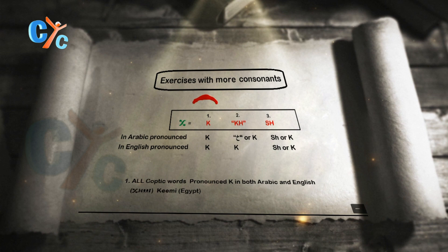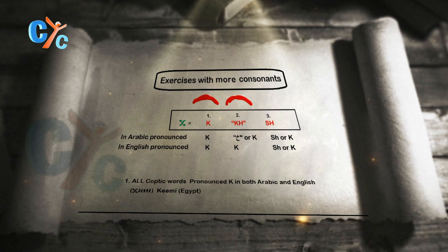It's K. So in all words that are Egyptian in origin and not borrowed from a foreign language — whether Greek, Hebrew, or other languages — this letter is always pronounced K. The next way of pronunciation is the Kh sound, which is present in some languages. For example, the Kh sound is present in Arabic, in Greek, and in German.